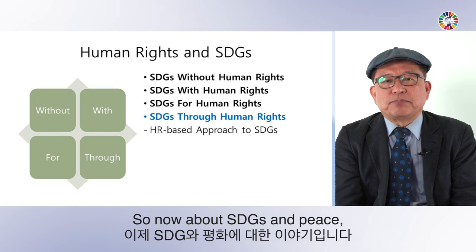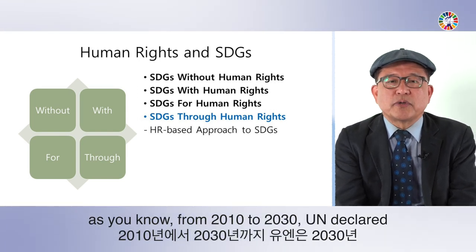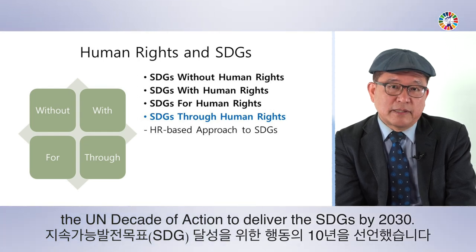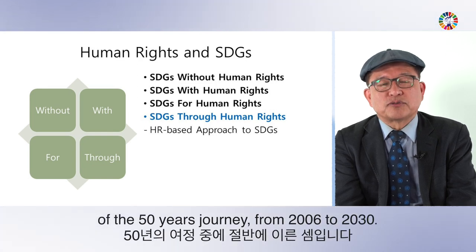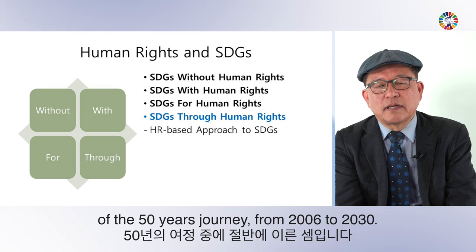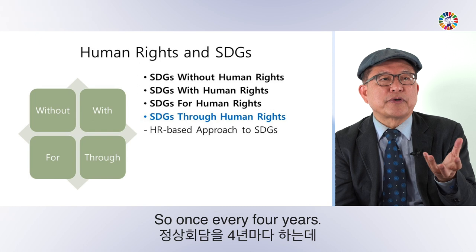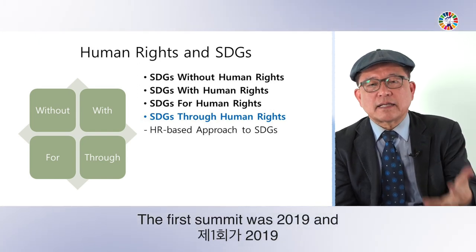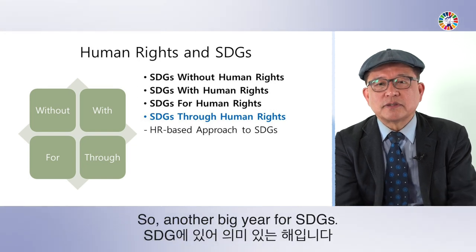Regarding SDG and peace: from 2020 to 2030, the UN declared the UN Decade of Action to deliver the SDGs by 2030. Next year is the halfway point of the journey from 2016 to 2030. That's why the UN is organizing the second SDG Summit — held once every four years. The first summit was 2019, the second is next year.